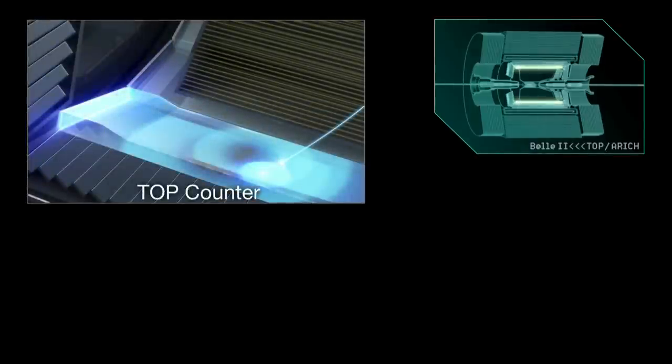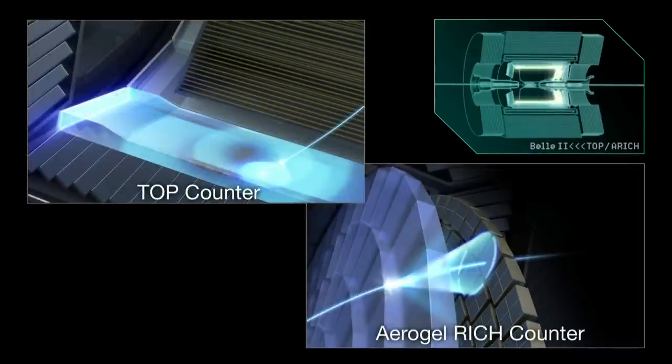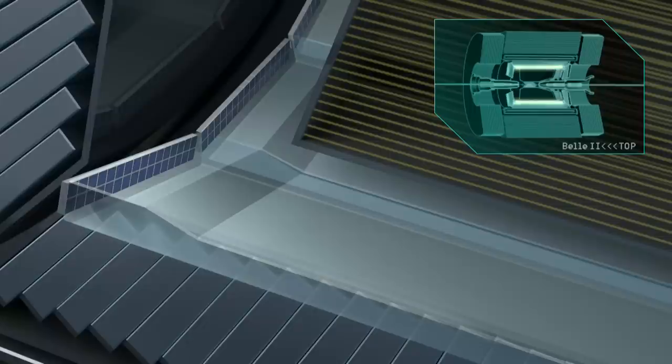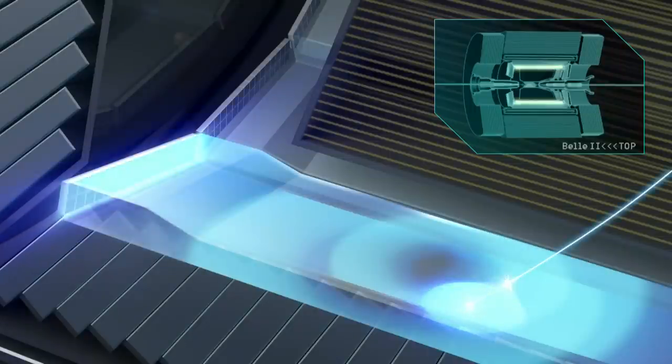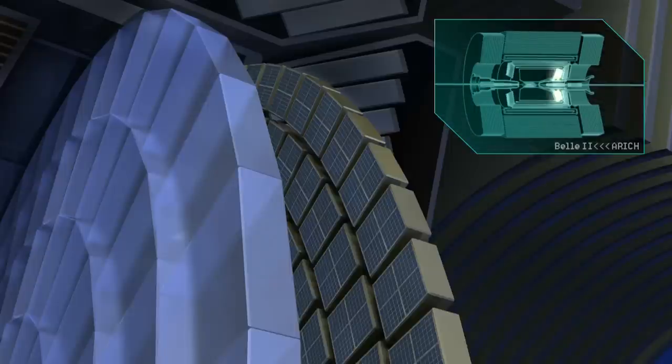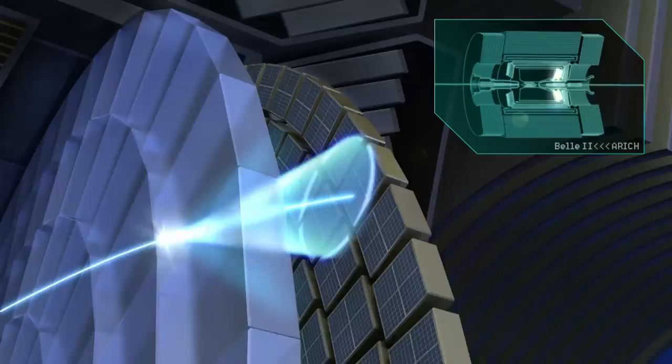Next comes the TOP counter and the aerogel RICH counter. A charged particle emits Cherenkov radiation when it enters these detectors. The timing and pattern information of the detected Cherenkov radiation tells us what kind of particle it is.